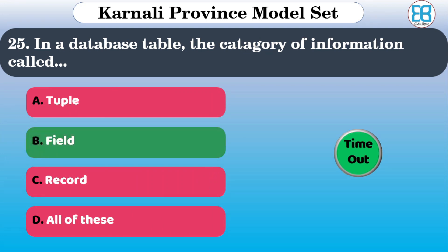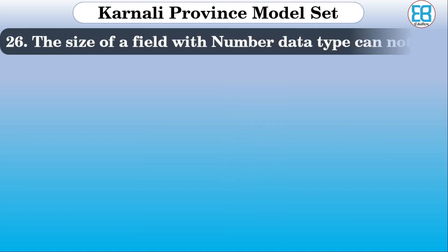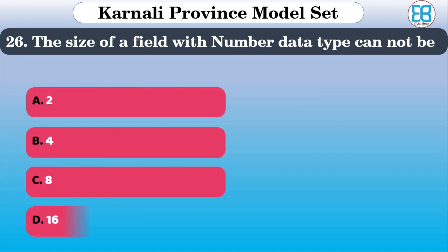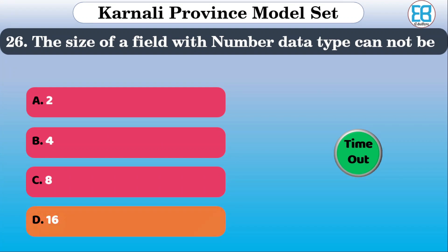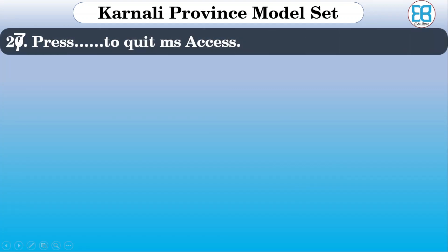The size of a field with the number data type can be: 4, 8, 16. The correct option is 16.